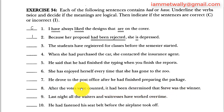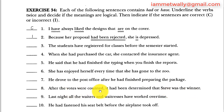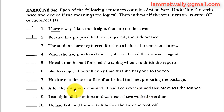Sentence eight: 'After the votes were counted, it had been determined that Steve was the winner.' 'Were counted' is past simple and 'had been determined' is passive past perfect. The past perfect is supposed to happen before the past simple, but here the past perfect comes after 'after the votes were counted.' This doesn't work — the counting happened first, so the sentence should read: 'After the votes had been counted, it was determined.' Sentence eight is incorrect.